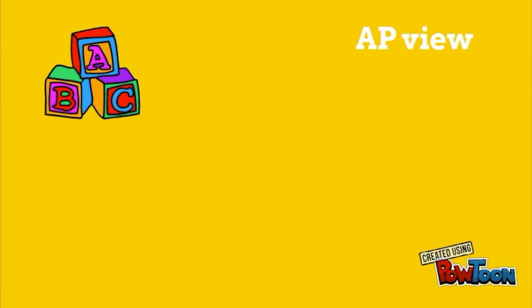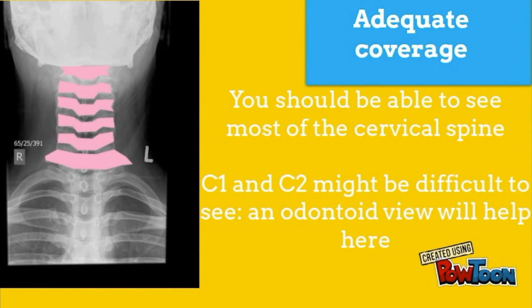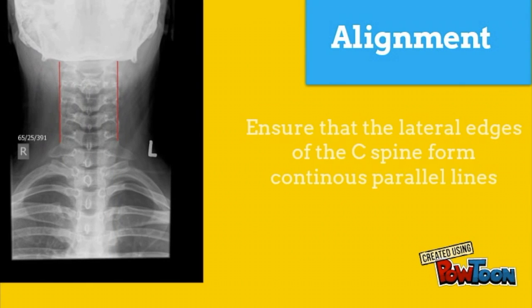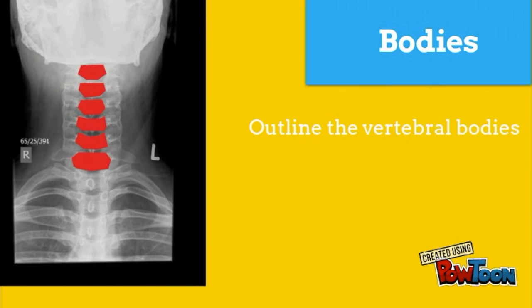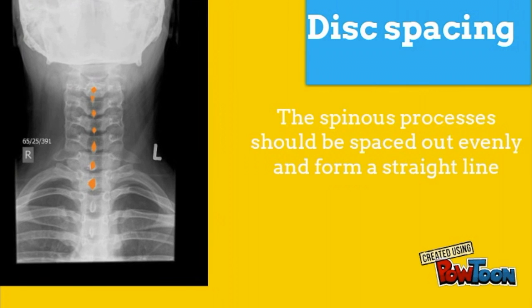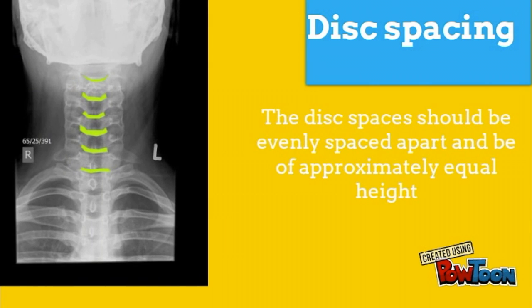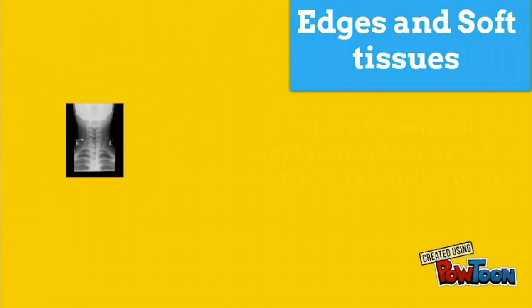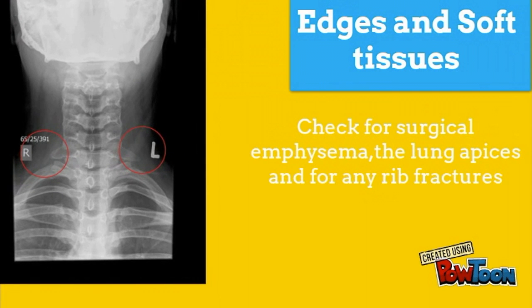Now we'll look at the AP view. Remember to follow your ABCDEs. Adequate coverage: you should be able to see most of the cervical spine; C1 and C2 might be difficult to see, and an odontoid view will help here. Alignment: ensure that the lateral edges of the C-spine form continuous parallel lines. Bodies: outline the vertebral bodies. Cortical outlines: outline the cortices of bone, but remember it is more difficult to see a fracture in this view. Disc spacing: the spinous processes should be spaced evenly and form a straight line, and disc spaces should be evenly spaced and of approximately equal height. Edges and soft tissues: check for surgical emphysema, the lung apices, and for any rib fractures.